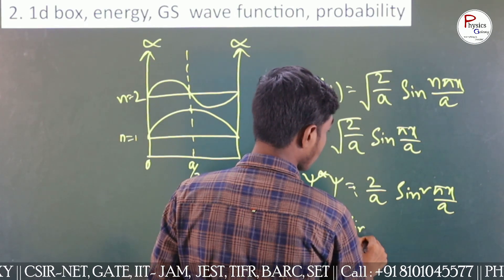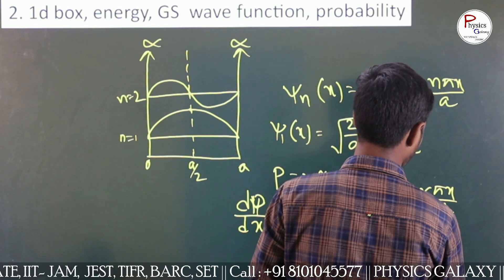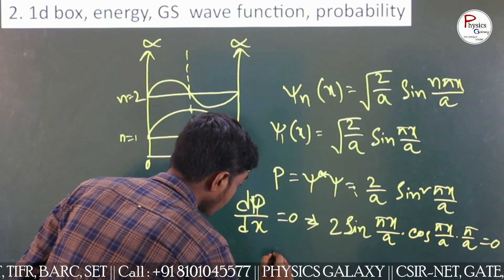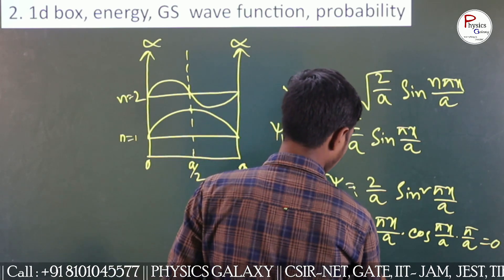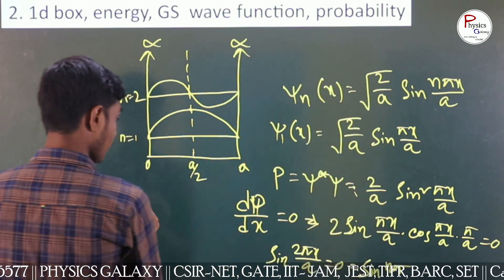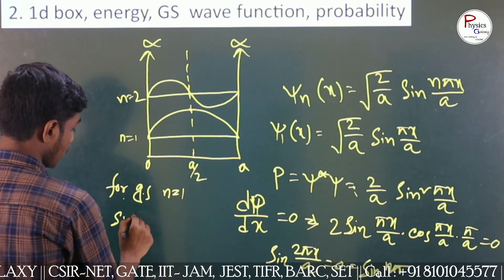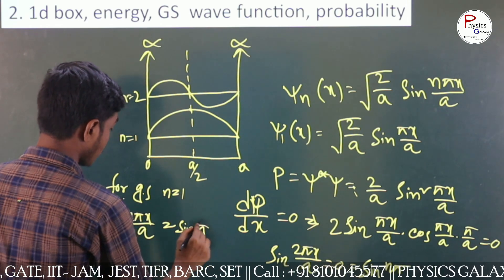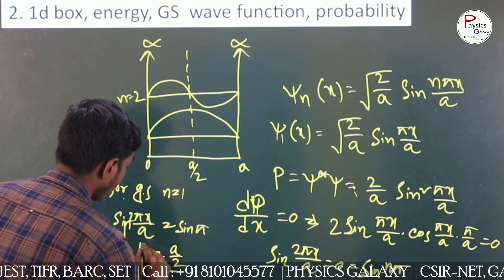They told me to prove it. As you know, the wave function psi_n equals root of 2 by a times sine(n*pi*x / a). For ground state, psi_1 equals root of 2 by a times sine(pi*x / a). The probability P equals psi* times psi, which is 2 by a times sine squared(pi*x / a). For maximum probability, dP by dx equals zero, which gives us that probability is maximum at x equal to a by 2.